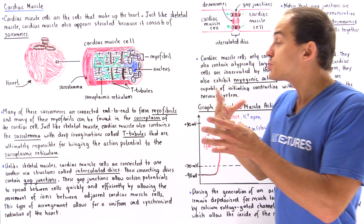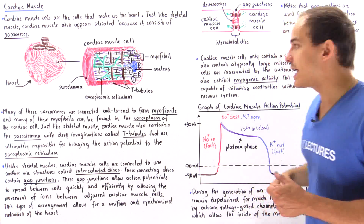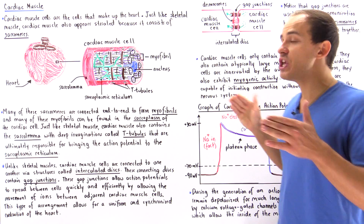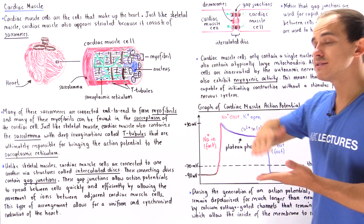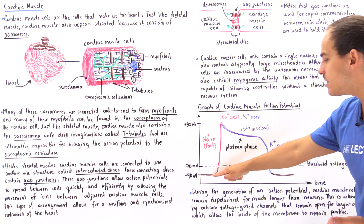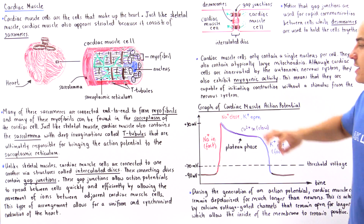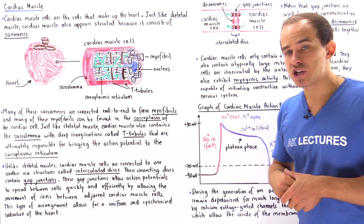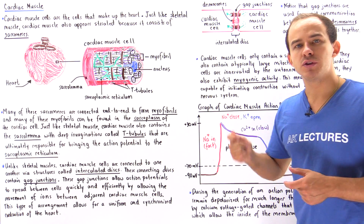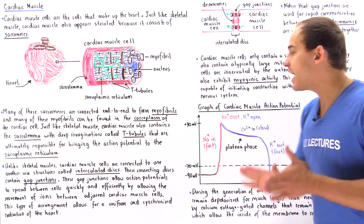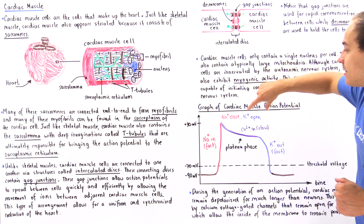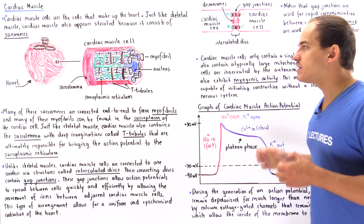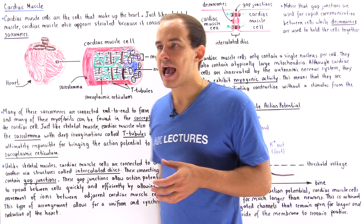The sodium voltage-gated channels on the membrane open quickly and allow rapid movement of sodium ions into the cell, causing the inside to become positive — this is the depolarization period. When we reach about positive 30 millivolts, sodium voltage-gated channels close while potassium voltage-gated channels begin to open slowly. At the same time, the calcium voltage-gated channels also open, and they are very slow to close.